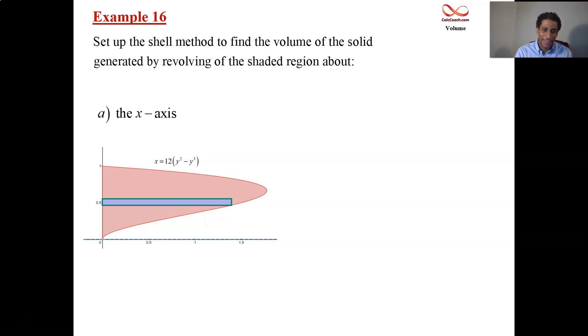It's shell, so you need the radius. How do you get the radius? You attach the axis of rotation to that rectangle. That's your radius. What's that distance? Off the x-axis upwards. That's going to be the distance y.